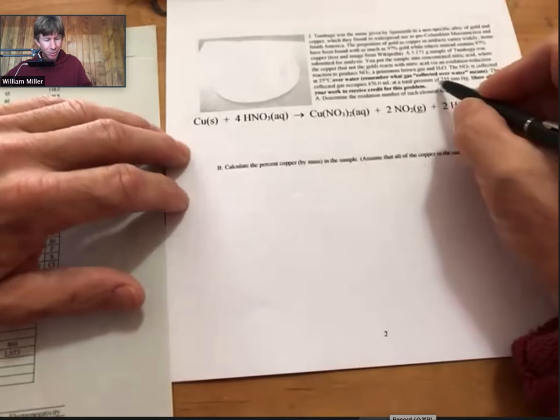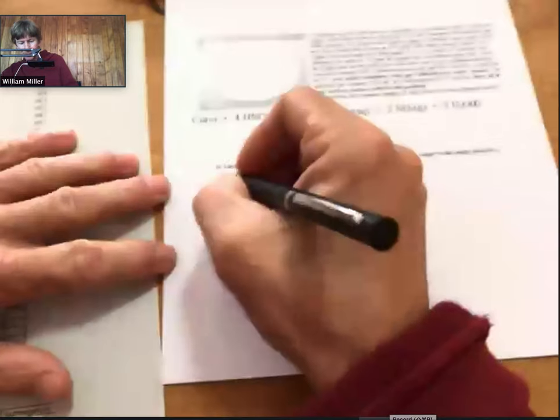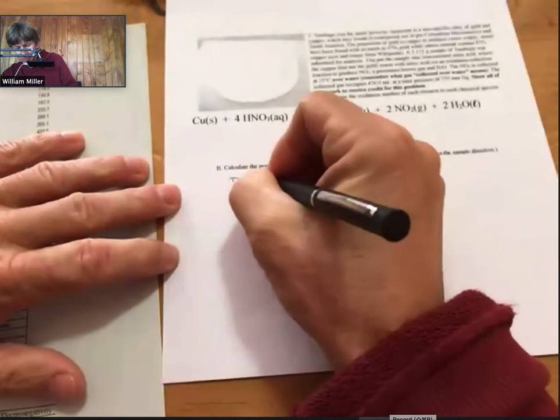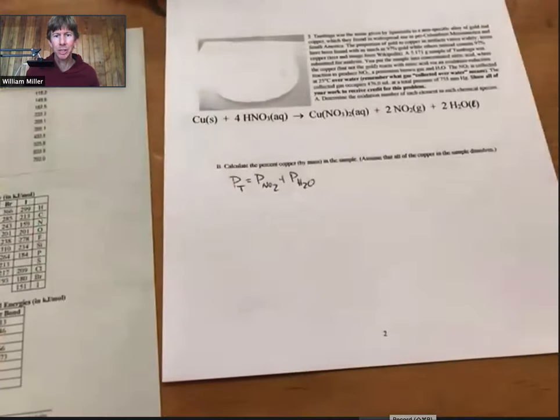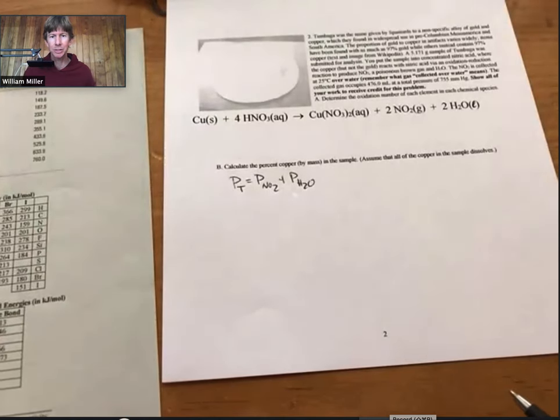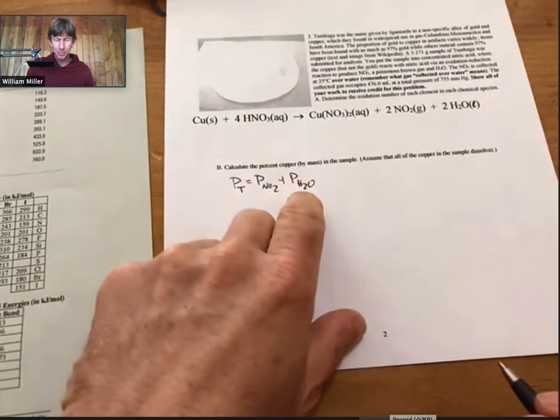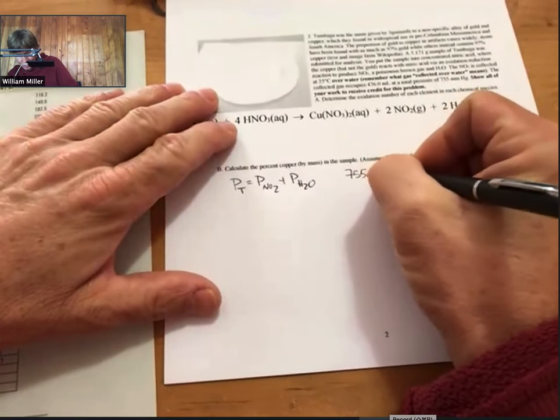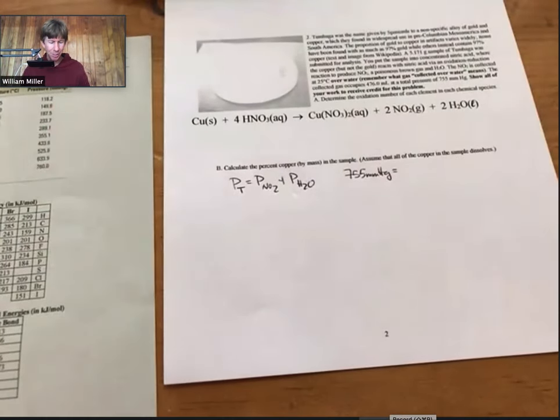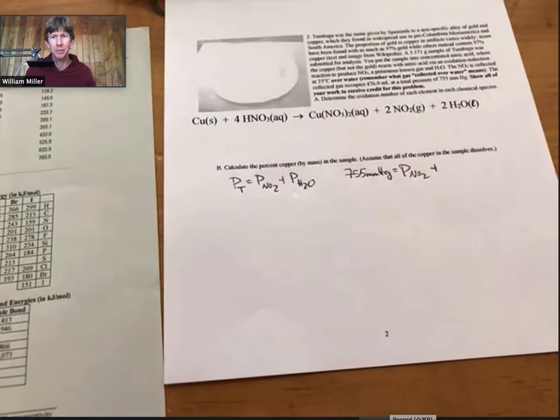Well, we have a total pressure. We need the partial pressure of nitrogen dioxide. The partial pressures of nitrogen dioxide plus the partial pressure of the H2O is going to equal the total pressure. We know the total pressure. We can look up the partial pressure of H2O, and the only thing we don't know is the partial pressure of nitrogen dioxide.